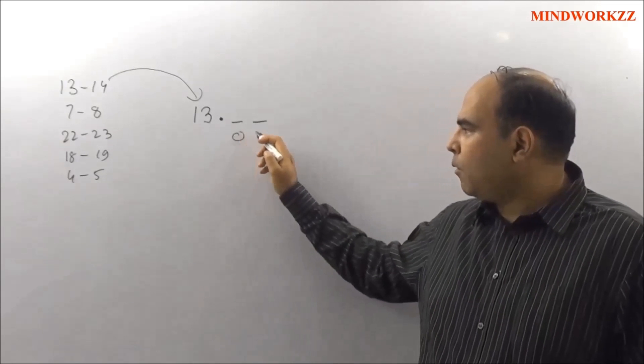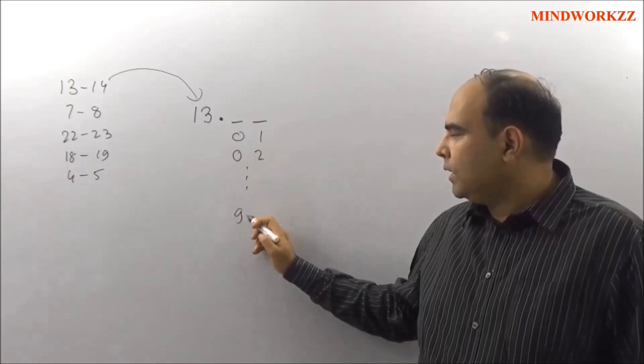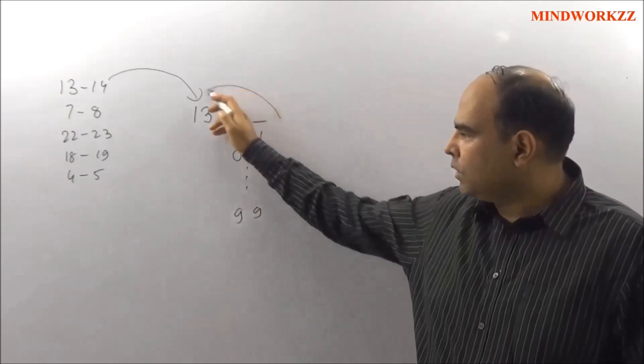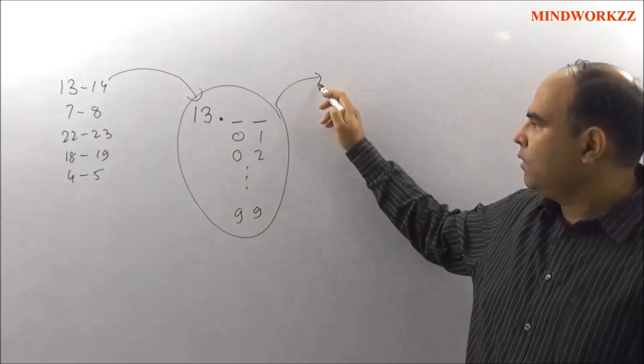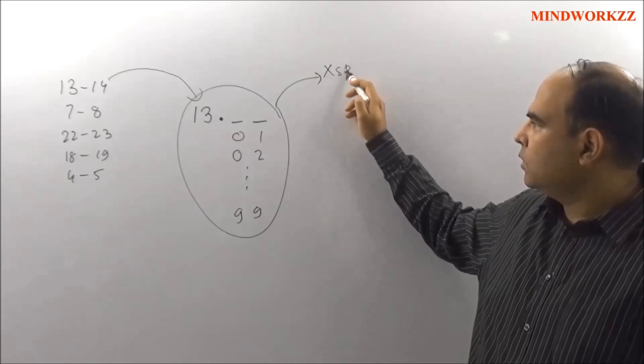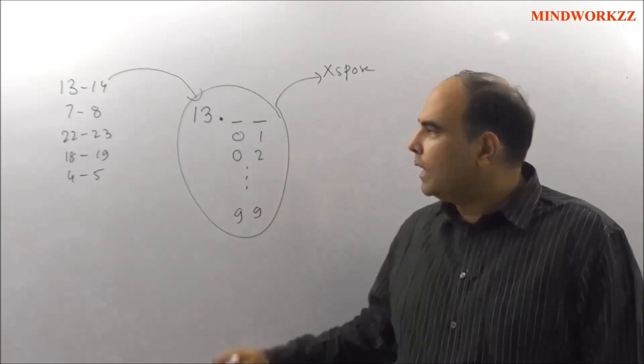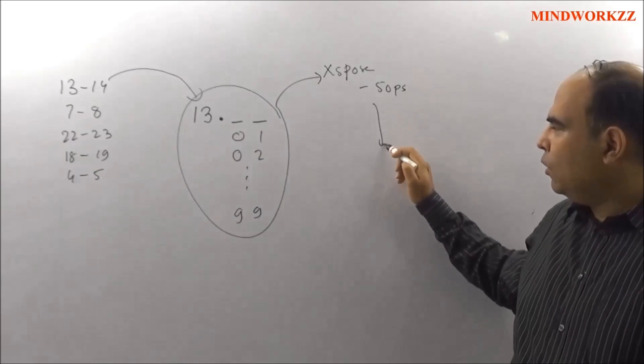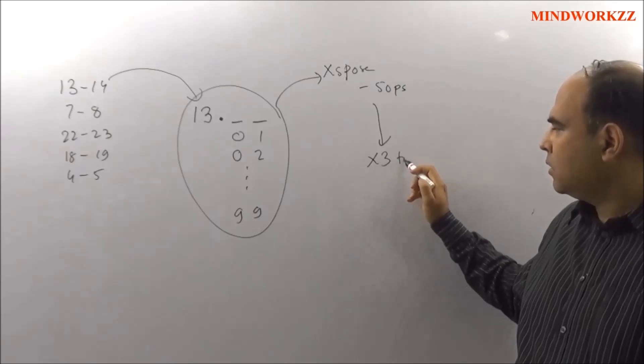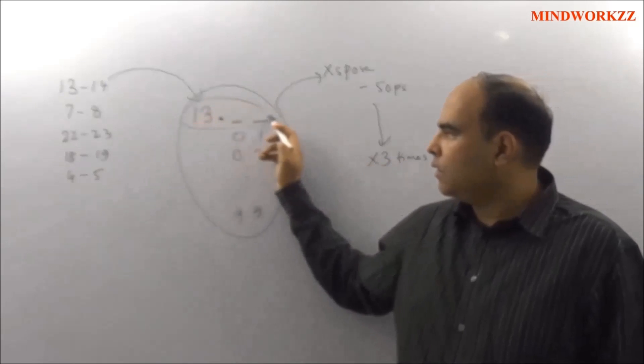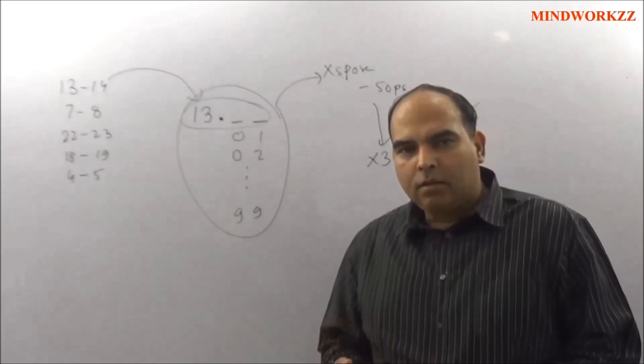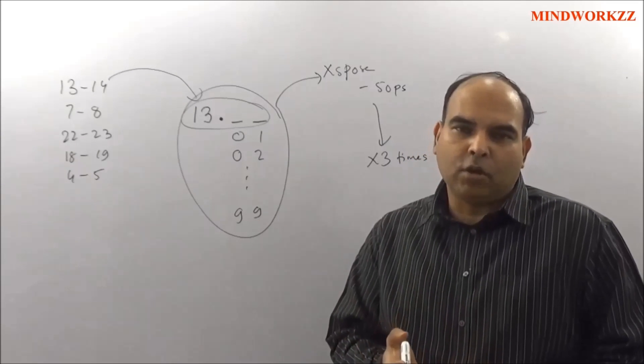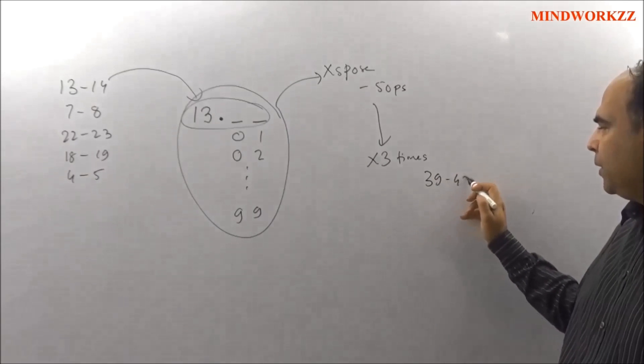But when you start thinking about how much paise it would be, you realize that the other condition tells you that if you reverse this check value, you transpose this check value rupees and paise, and then you spend 50 paise, you get to a value which is 3 times the original value. And that tells you that 3 times the original value for 13 rupees to 14 rupees, 3 times the original value should be between 39 to 42 rupees.